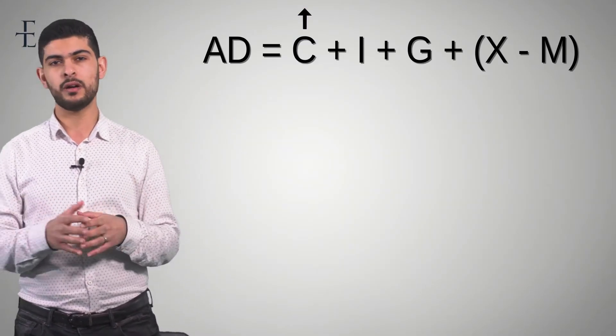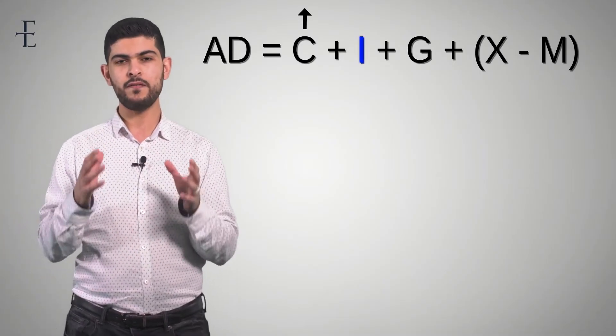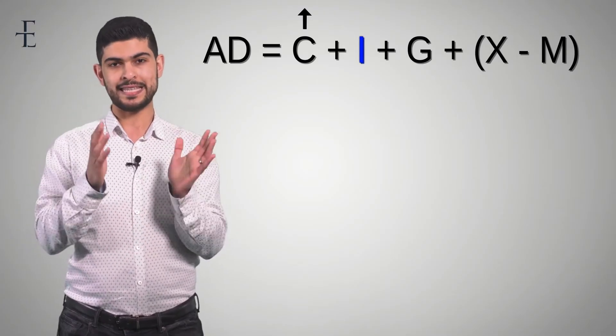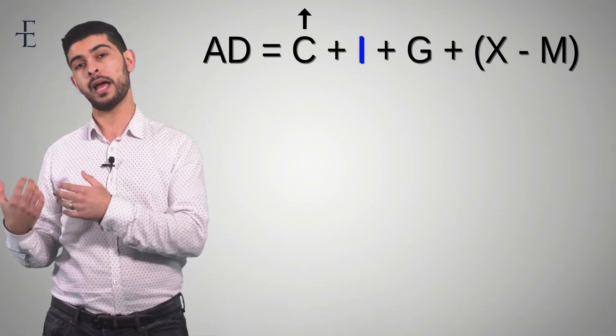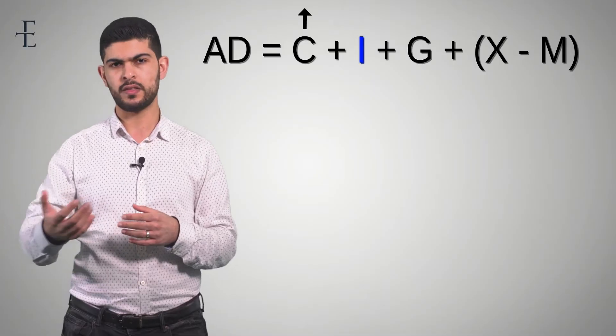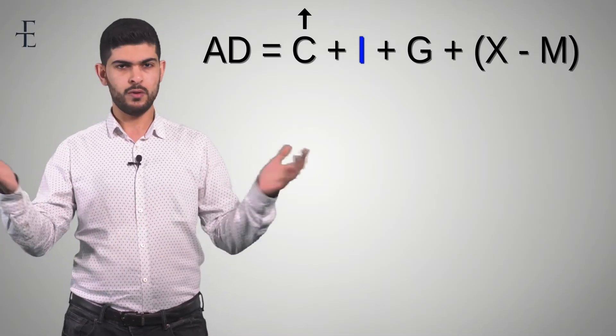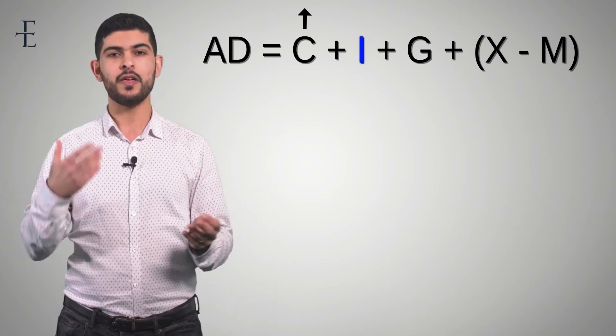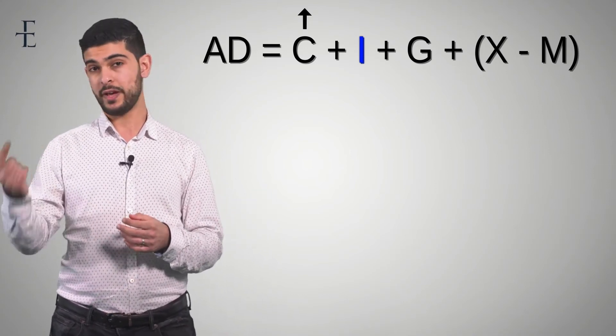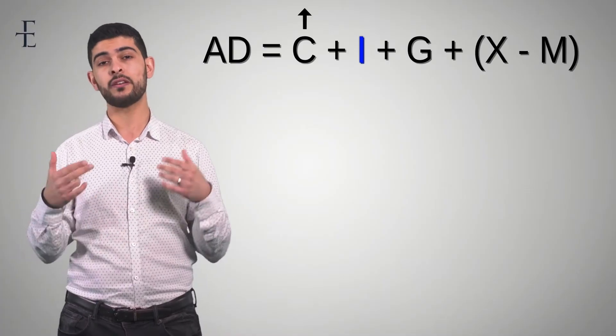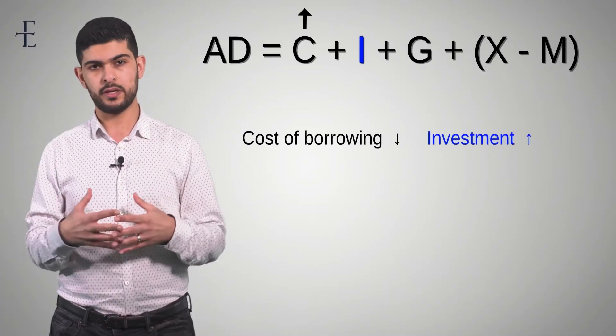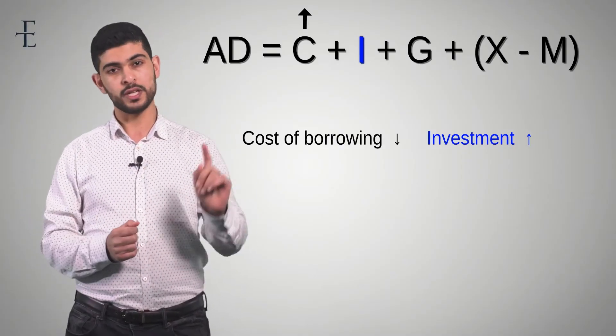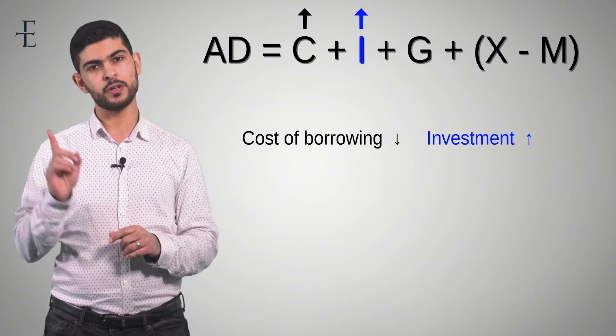Second component of aggregate demand is investment. From now on, every single time you hear the word investment, I want you to think of an investor as someone that necessarily needs to borrow money from the bank in order to invest into things like capital machinery. Well, when interest rates are low, are they going to borrow more or less? Well, the cost of borrowing is low. Therefore, they're likely to borrow more, invest more. And you can add that they're more likely to take risk. Because if it doesn't quite pay off, it's not the end of the world. I'm not paying back such an enormous interest rate. So we've got consumption going up, investment going up.